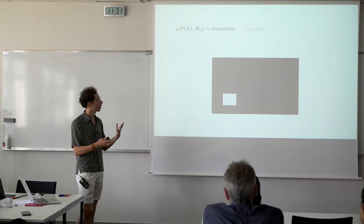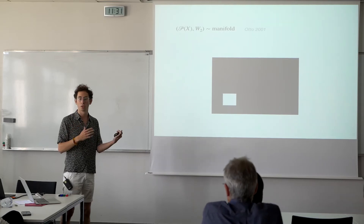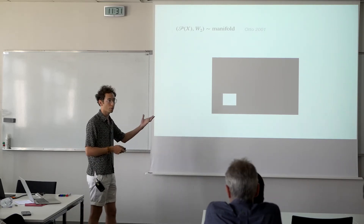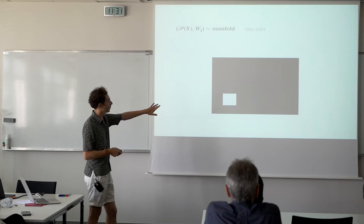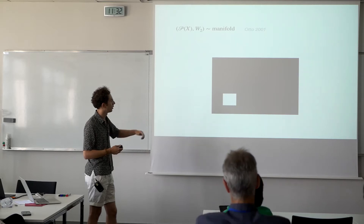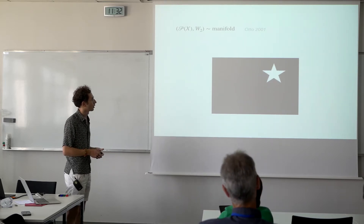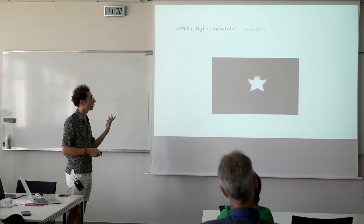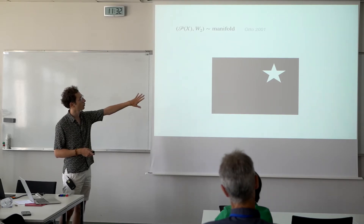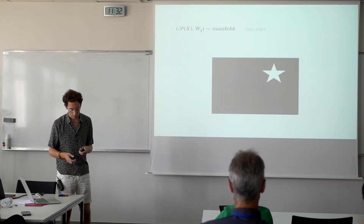In the previous talk, Trifon showed what a typical geodesic might look like if you have two Gaussians as endpoints. Here I want to show a 2D example. The picture shows the initial distribution, uniformly supported on a square — the black region has no mass. This is what a geodesic looks like. The final distribution is uniformly supported on the top, and you see this kind of translation-type phenomenon.